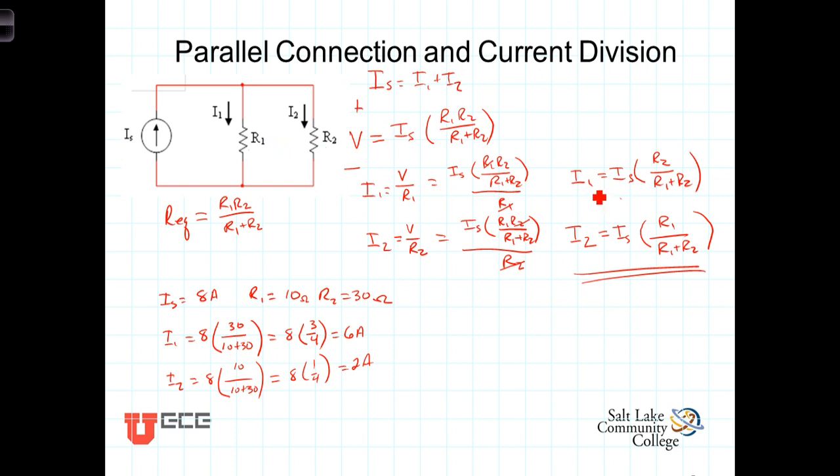And the current I1, or the percentage of the total current flowing through R1, is equal to the percentage that R2 is of the sum of those two.